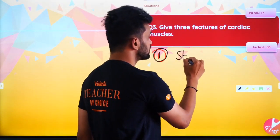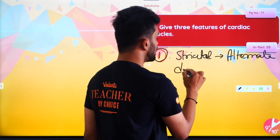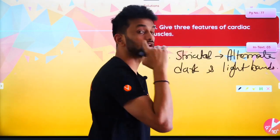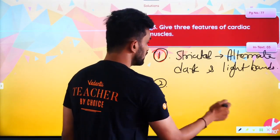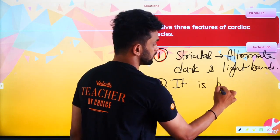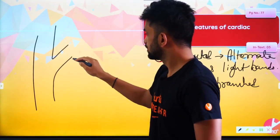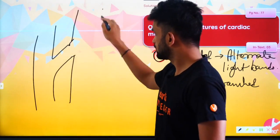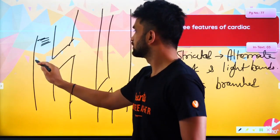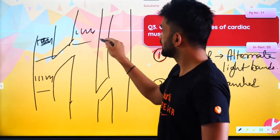The first feature is: it is striated — it has alternate dark and light bands. The second feature is: it is branched. It has branching. I'll just show it to you — it is like this, and you can see it has dark and light bands. Intercalated discs are also present.